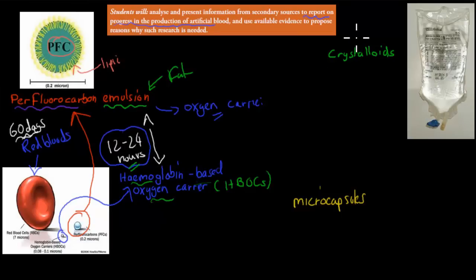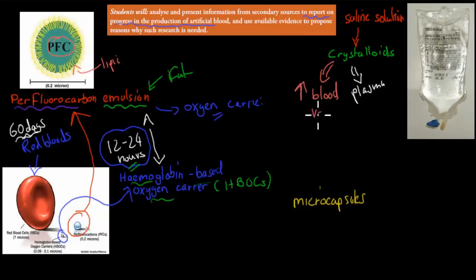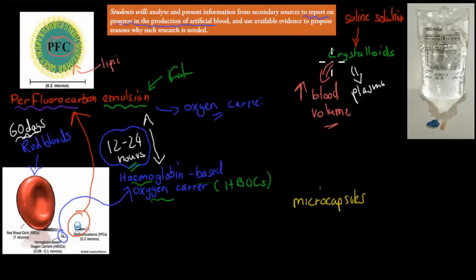We also have crystalloids, which is saline solution — basically salt water with some other electrolytes. This replaces plasma. Remember, plasma was mostly water, and crystalloids are quite similar. What this allows us to do is increase our blood volume. So if someone has lost a lot of blood, especially plasma, they can have crystalloid solution injected, and it will have a short-term positive effect, increasing the blood volume until they make their own plasma again.